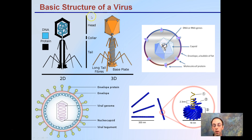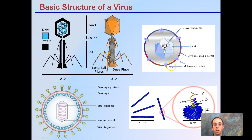Viruses can look very different — some look like alien spider-like structures, some are rod-shaped, some are more spherical — but the structure is basically the same: a protein coat with DNA on the inside, though some can also contain RNA.